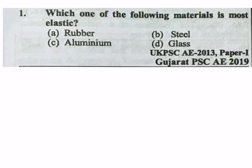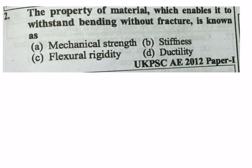Which one of the following metals is more elastic? Options: rubber, steel, aluminium, glass. Steel is more elastic than rubber, aluminium, and glass. So B is the correct answer.